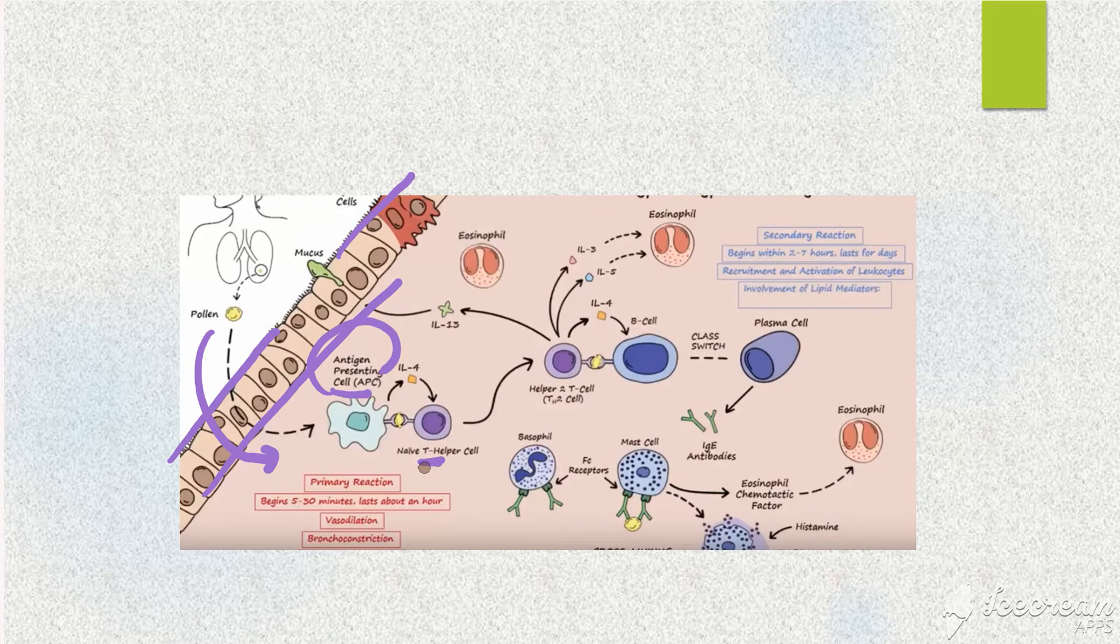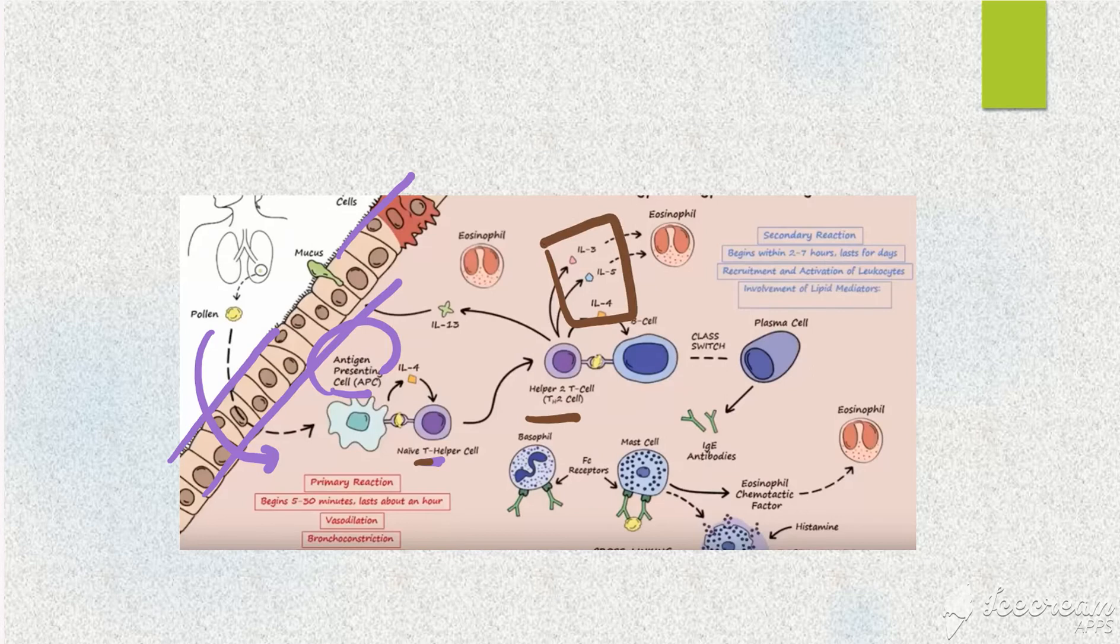Once this pollen grain is presented, this T helper cell will get converted into a T helper 2 cell. They will produce interleukin 4 and 5, which will recruit your eosinophils.